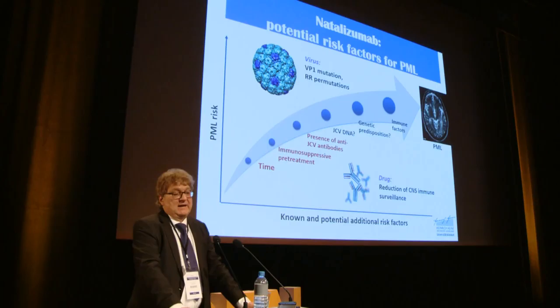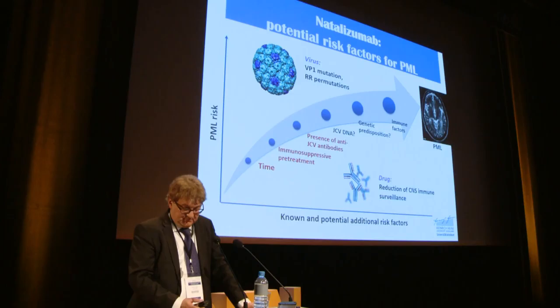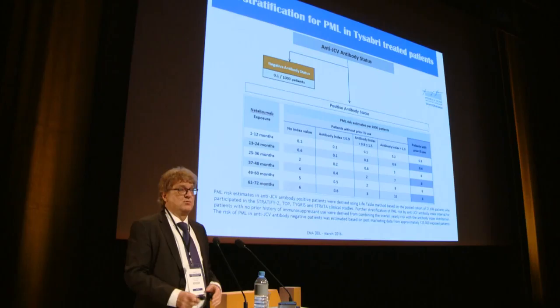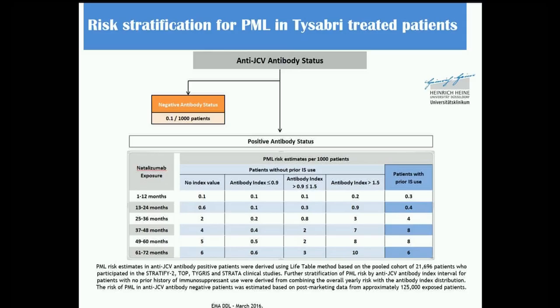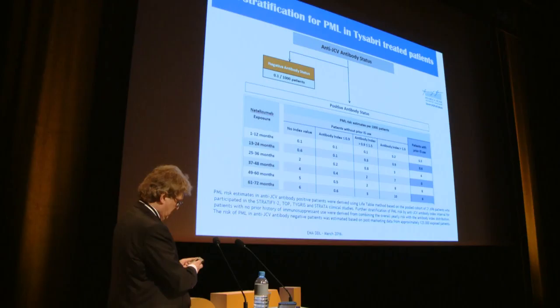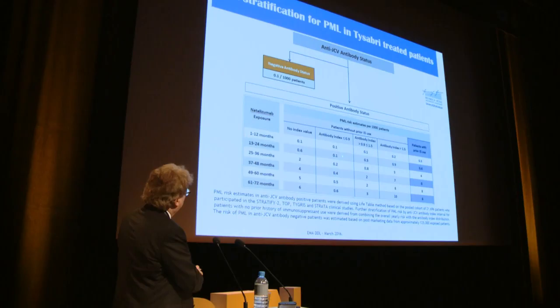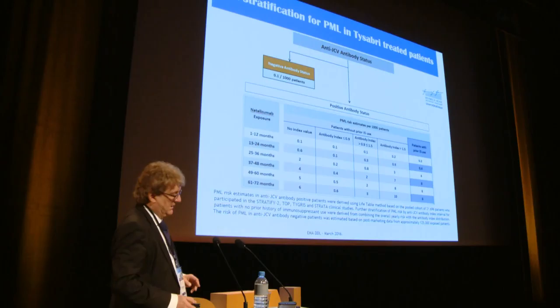A major concern was the occurrence of PML cases with natalizumab, prompting extensive research to identify risk factors: JC virus infection, prior history of immunosuppression, and duration of treatment all dictate the risk. The titer of JCV antibodies was related to the extent of risk for developing PML as a consequence of natalizumab treatment.